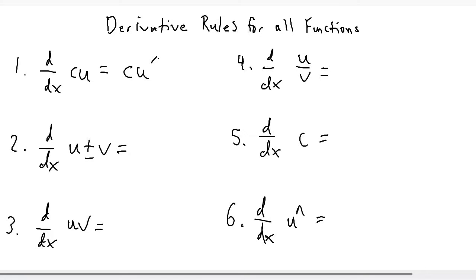For number two, the derivative of u plus or minus v is the sum and difference rule, so it's going to be equal to u prime plus or minus v prime.